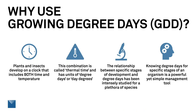First, I want to talk about why we would use growing degree days, or GDD. The concept is really simple: plants and insects — insects being cold-blooded — develop on a clock that includes not only time, but both time and temperature. This combination is called thermal time. It has the units of degree days, or as some people insist, day degrees, but we're going to use degree days in our discussion here.